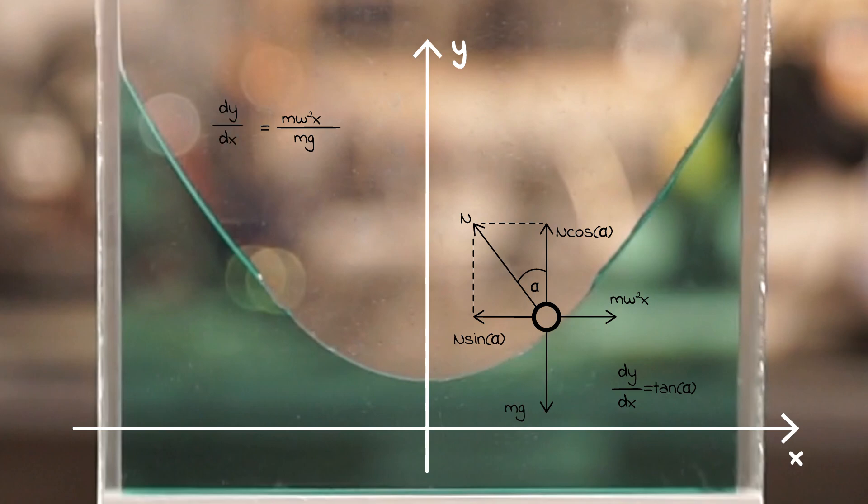We have a relation between the derivative of y and x. What we have here is probably the simplest form of a differential equation. The way to solve this equation is to integrate both sides to get an expression for y.